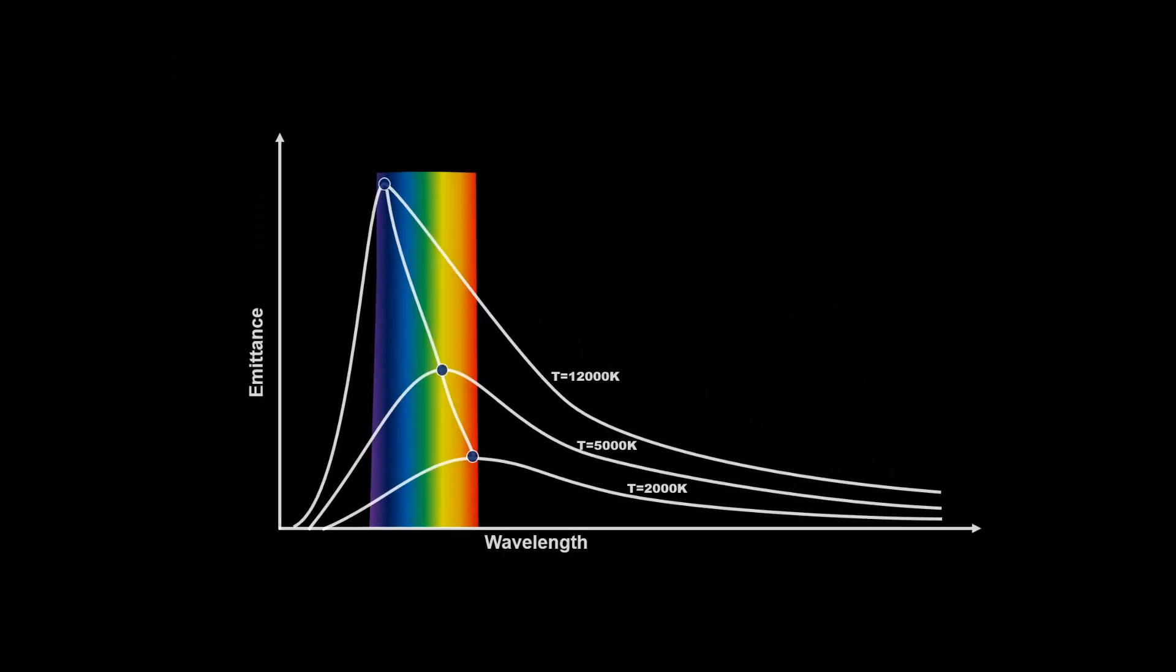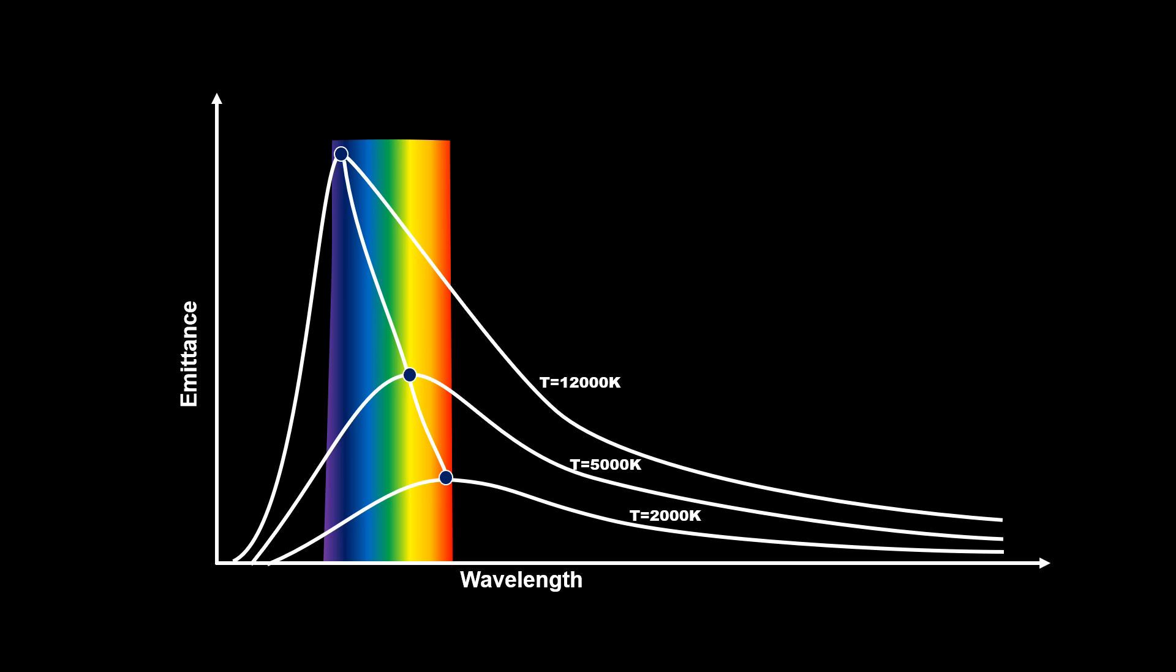Why does Wien's displacement law fail to explain the blackbody radiation curve? Actually, Wien's law is very good at explaining the shorter wavelength of the radiation curve. But at the longer wavelength, this law fails to explain this curve.